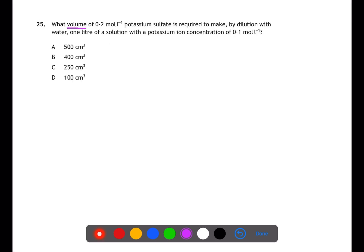Question 25, what volume of 0.2 molar potassium sulfate is required to make by dilution with water one liter of a solution with a potassium ion concentration of 0.1 mole per liter? To start this question, we need to know the formula for potassium sulfate, which is K2SO4. SO4 having a valency of 2, K having a valency of 1. This means that in solution, you have two potassium ions for every one potassium sulfate you dissolve.